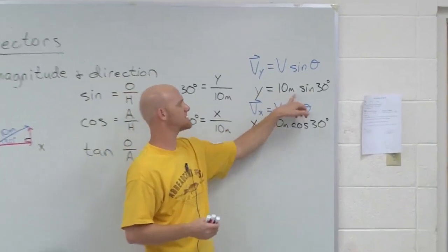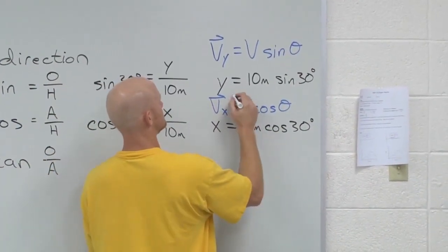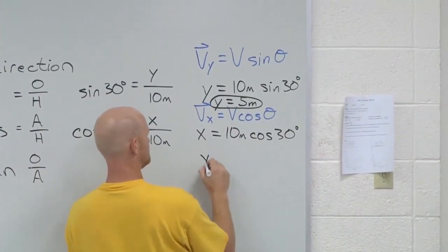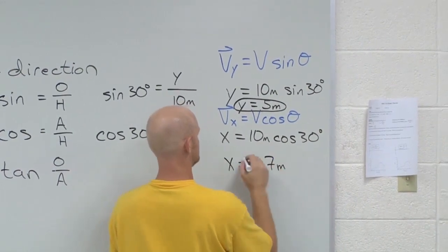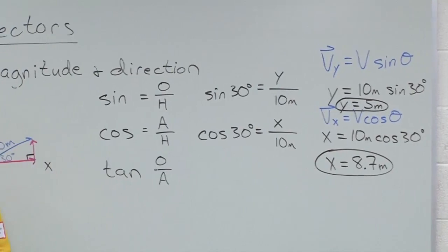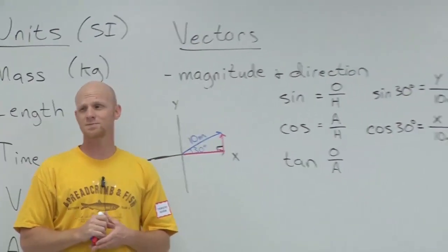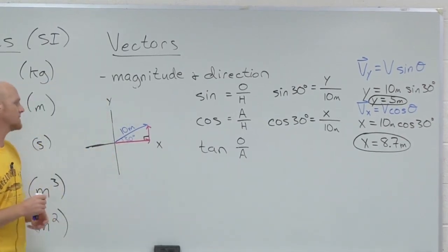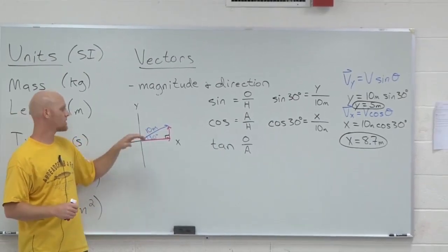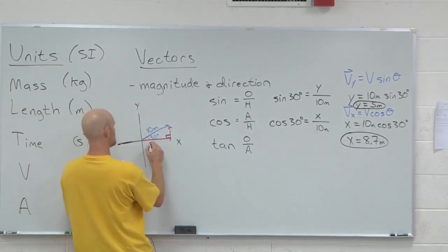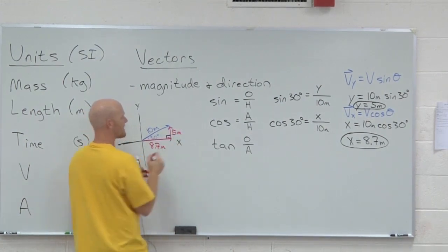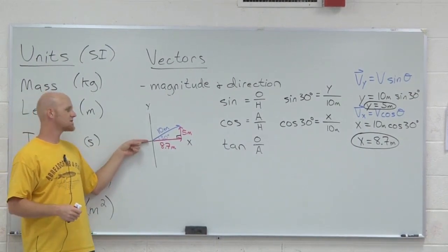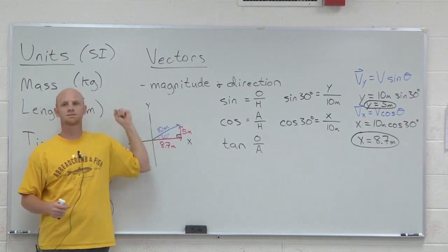Let's actually put a numerical value here. What is 10 times sine 30? And what is 10 cosine 30? 8.7. So I just took a vector that we already had and broke it down into x and y components. The x-component was 8.7 meters and the y-component was 5 meters. This vector of 10 meters at 30 degrees above the x-axis is exactly the same as going 8.7 meters in the x-direction followed by 5 meters in the y-direction.